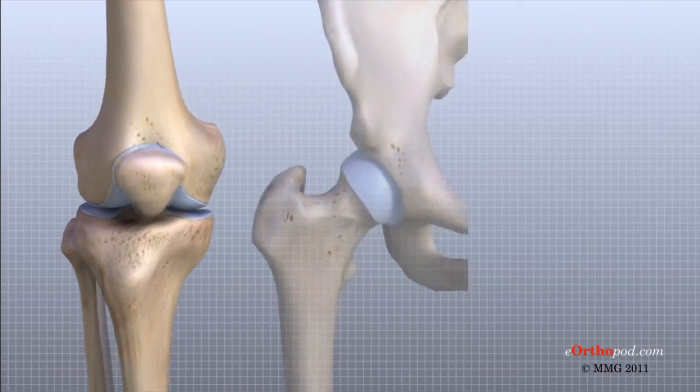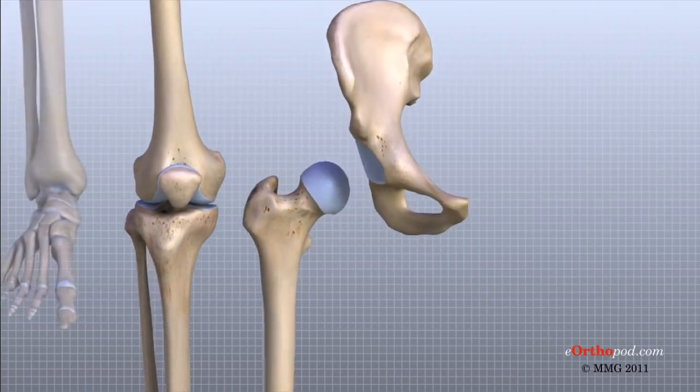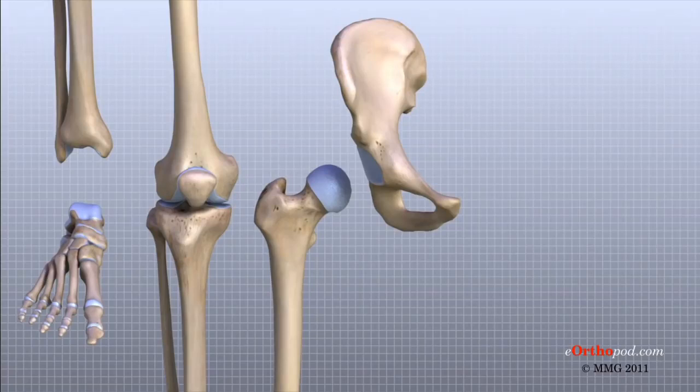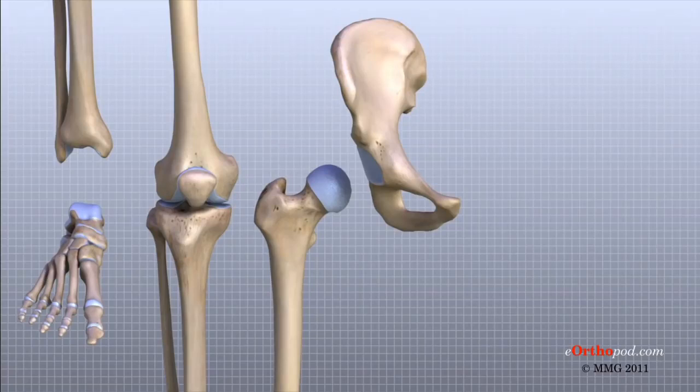The hip joint, for example, is a ball that sits inside a deep socket. The ankle joint has a shape similar to a mortis and tenon, a way of joining wood used by craftsmen for centuries.